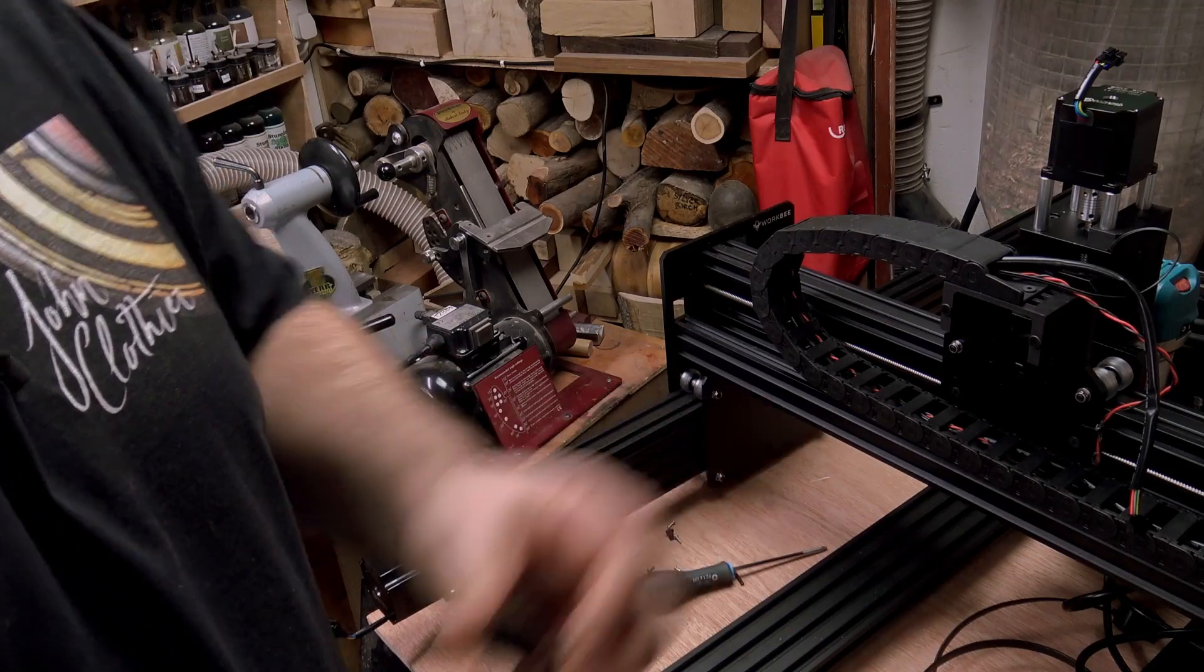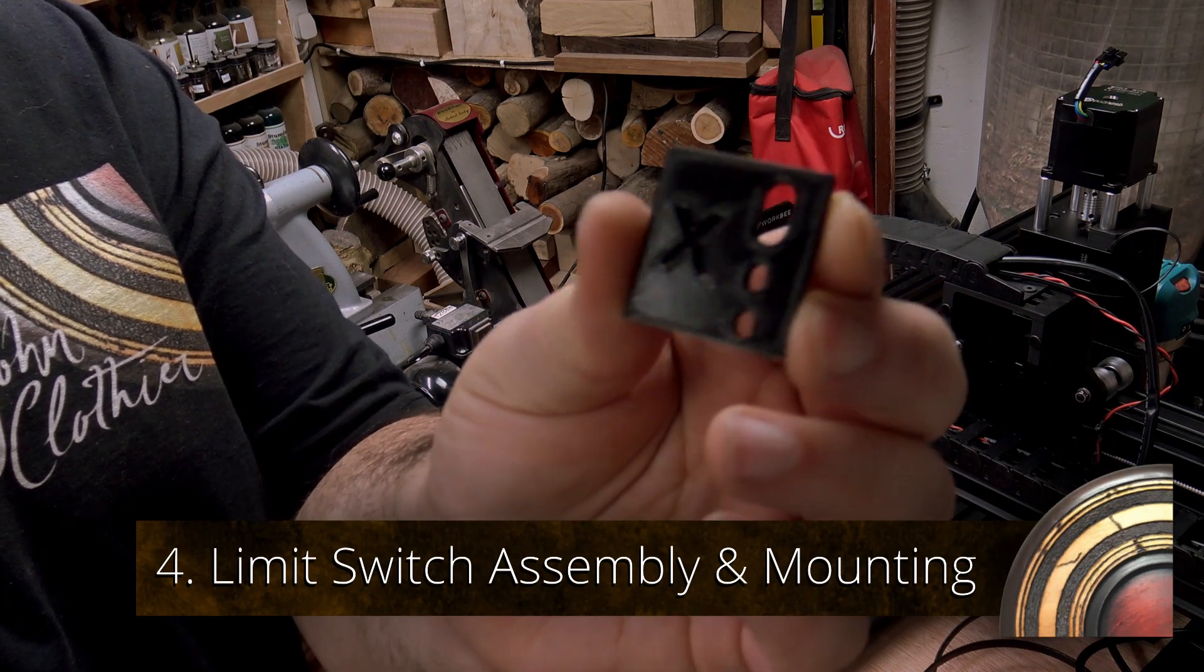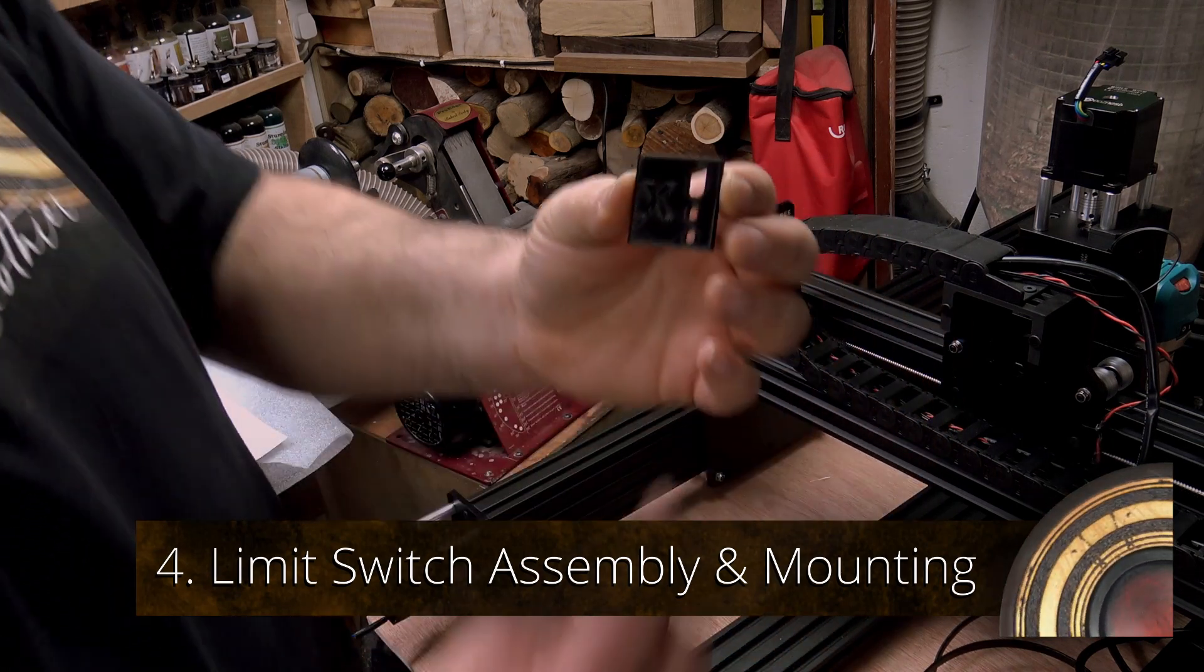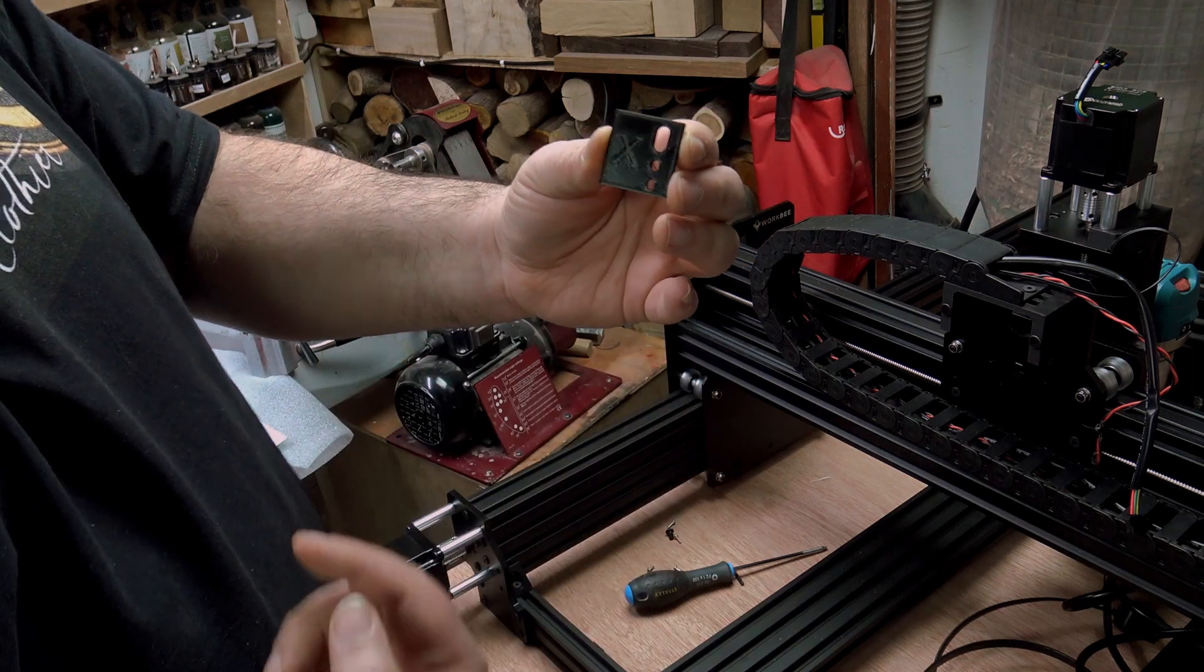So let's get on with the video. Right, so on to the limit switch assembly mounting. We're going to start with the X-axis and you're going to need this plate here because it's got an X on it. It needs to be oriented with a slot at the top and the X at the front.